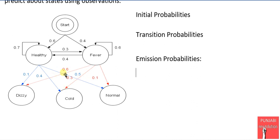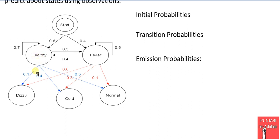Given the state fever, we have 0.1 probability for normal, 0.3 for cold, and 0.6 for dizzy. If we sum all three probabilities marked with the red line: 0.1 plus 0.3 equals 0.4, plus 0.6 equals 1. The sum of all emission probabilities for the healthy state is also 1: 0.1 plus 0.4 plus 0.5 equals 1.